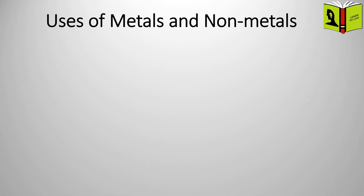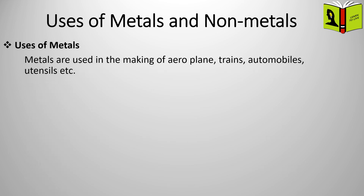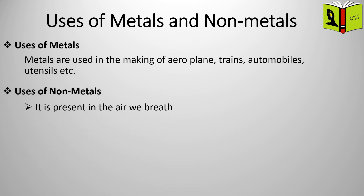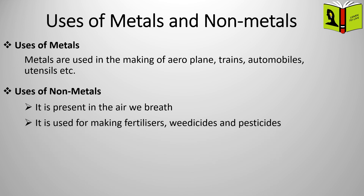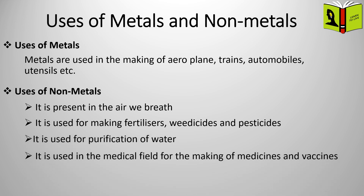Uses of metals and non-metals. Metals are used in the making of aeroplanes, trains, automobiles, utensils, etc. Uses of non-metals: oxygen is present in the air we breathe; non-metals are used for making fertilizers, weedicides, and pesticides; they are used for purification of water; and they are used in the medical field for the making of medicines and vaccines.